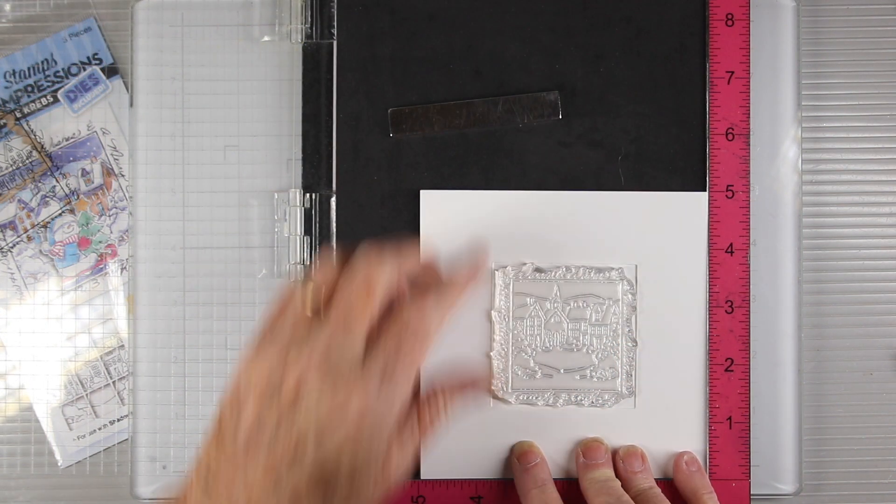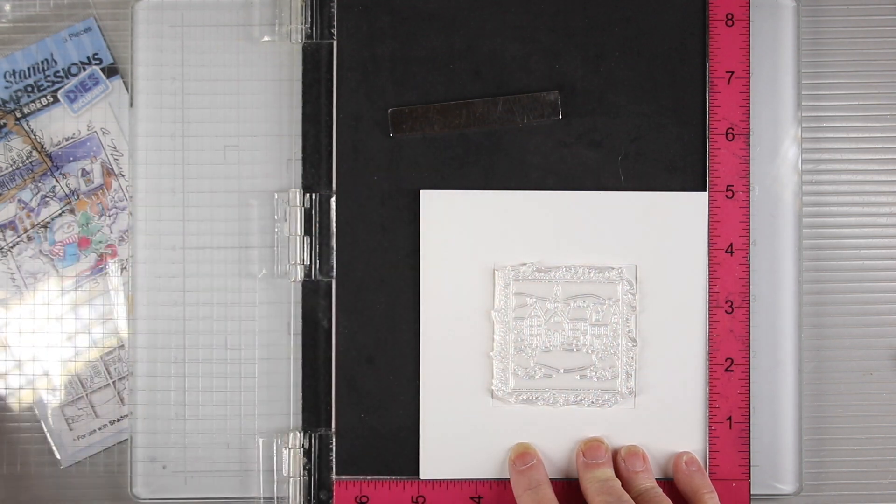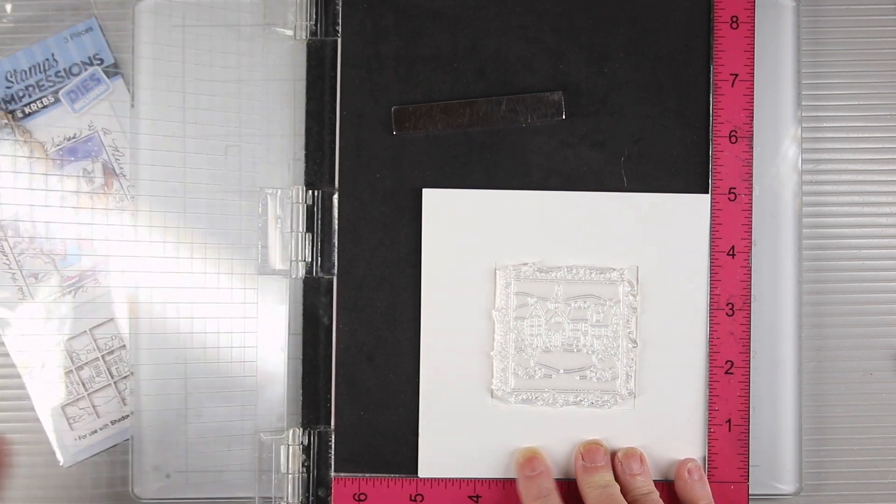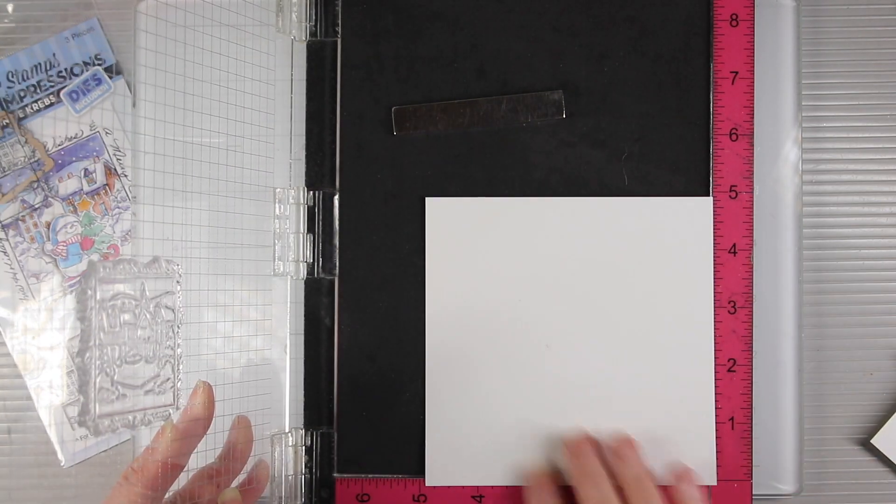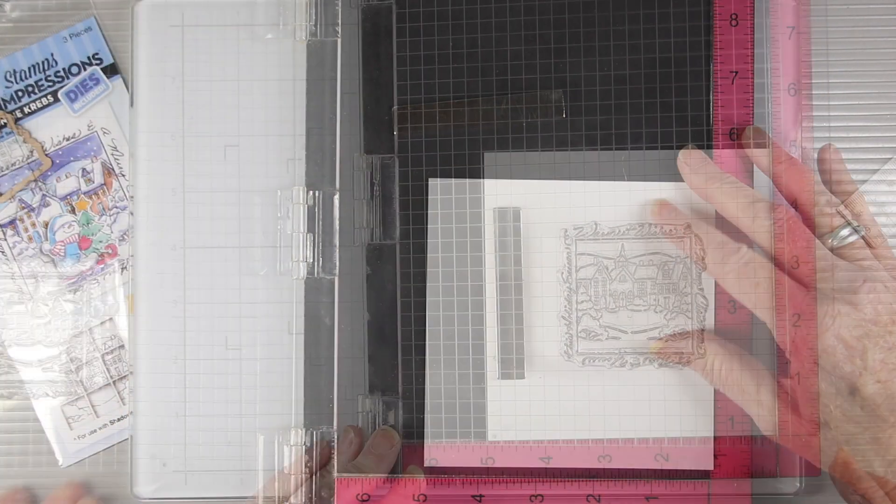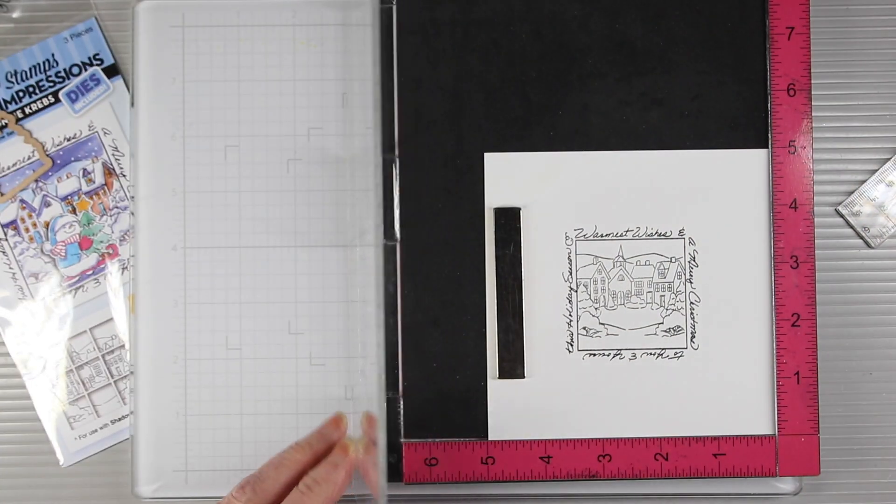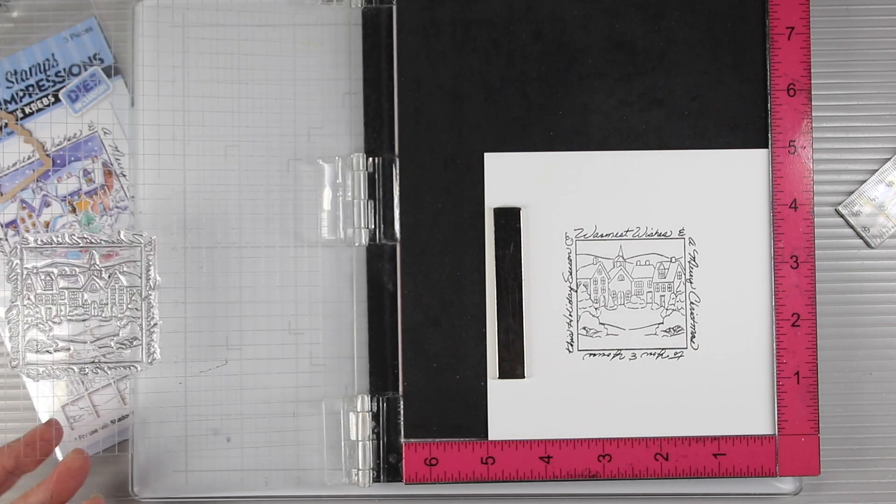Now I have both pieces of paper, the frame and the background, in the MISTI and I'm just going to shut the door to grab my stamp, then I can remove the frame before stamping. I've used simonsaysstamp intense black ink.